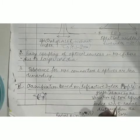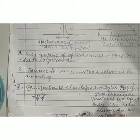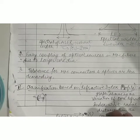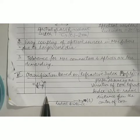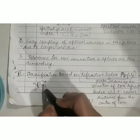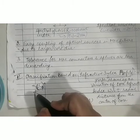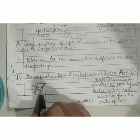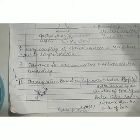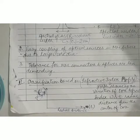The refractive index profile is a diagrammatic representation — a graph — which shows how the refractive index inside the optical fiber core varies with respect to the radial distance from the center of the core. In other words, it is a graph showing the variation of the refractive index N(R) as a function of the radial distance R from the center of the core — how the refractive index changes when moving from the center of the core towards the cladding.